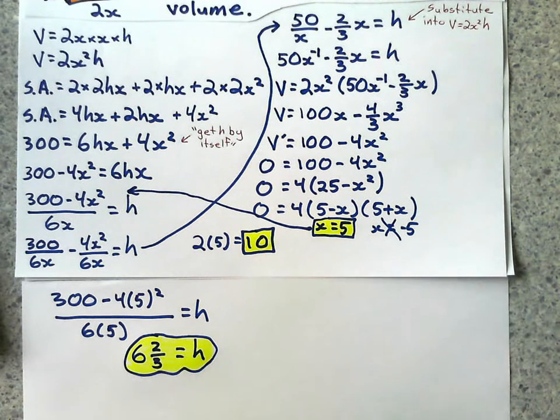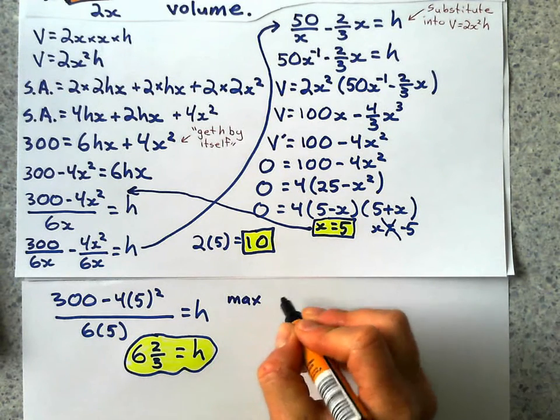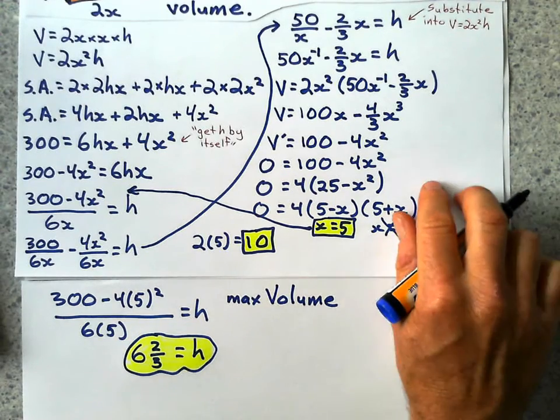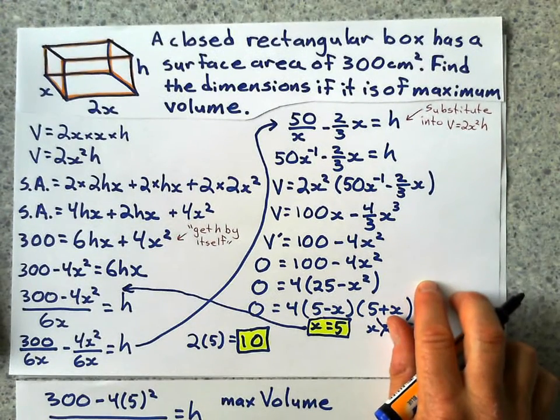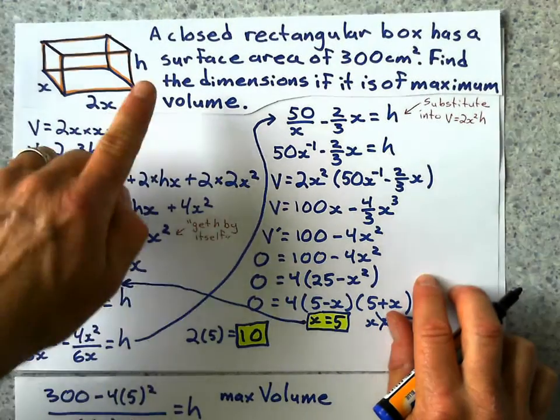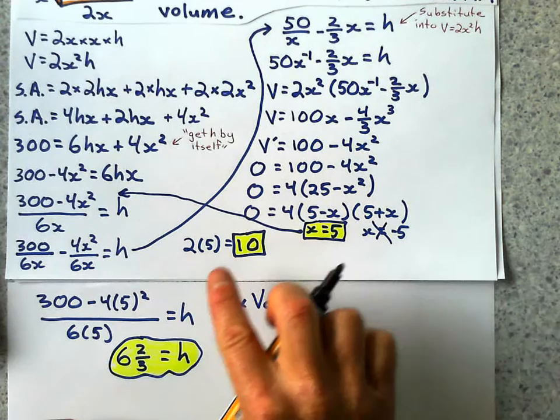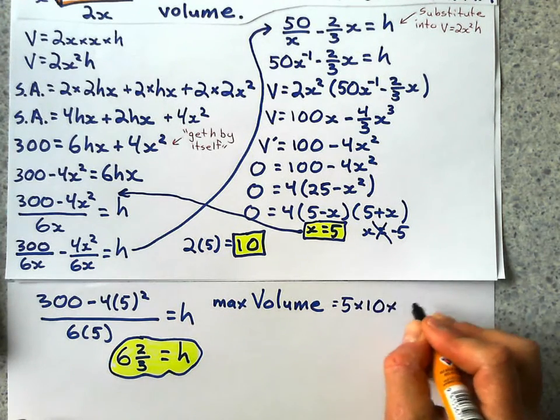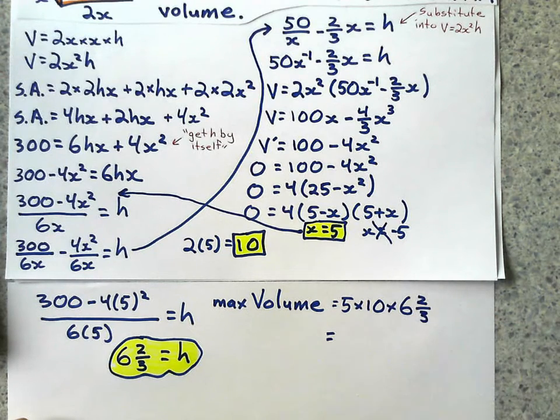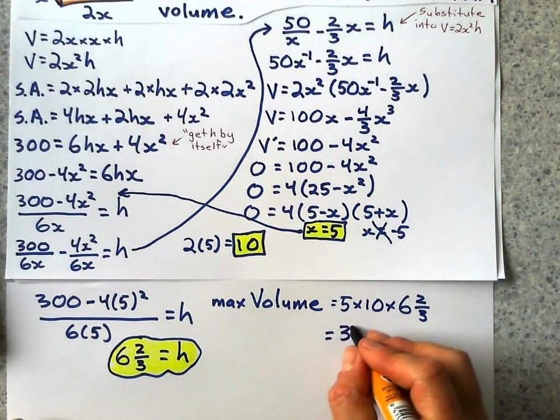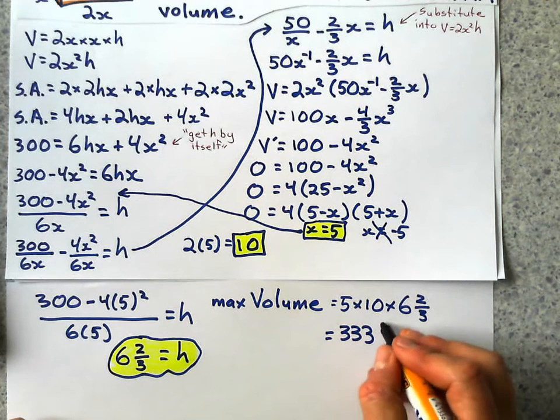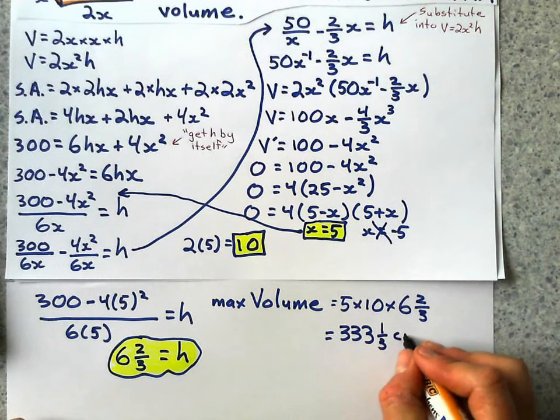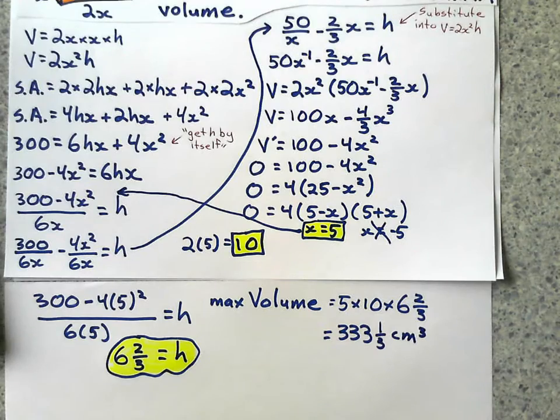So that's nice. So what that tells me are my three dimensions. That would give me my max volume. And so if I had 300 square centimeters of surface area and these were the dimensions, then my max volume would be 5 by 10 by 6 and 2 thirds. And that would be 5 times 10 times 6 and 2 thirds for a grand total of 333. Let's not do any rounding here. Let's keep it as a fraction. 333 and a third. Let's say it's centimeters cubed.